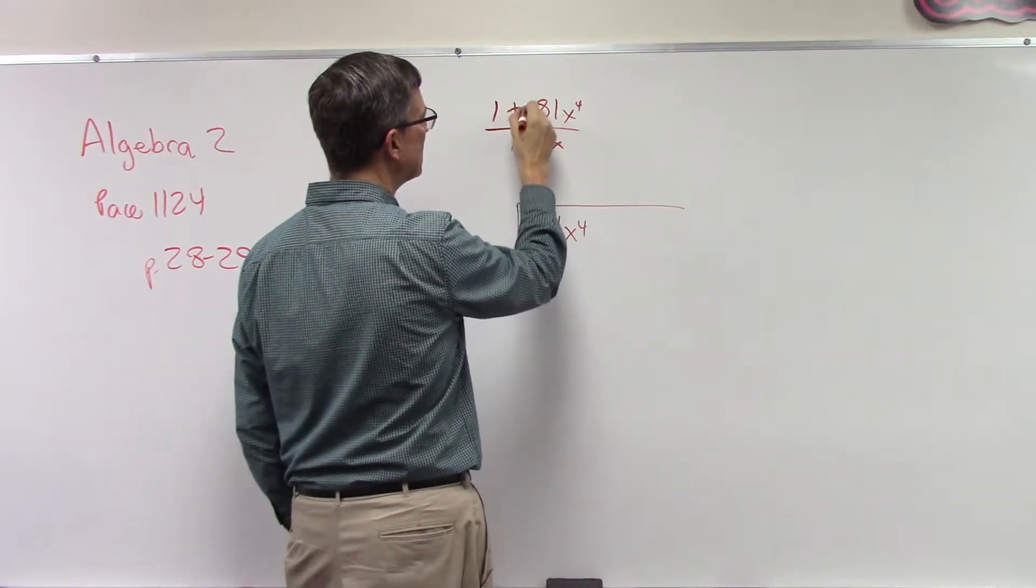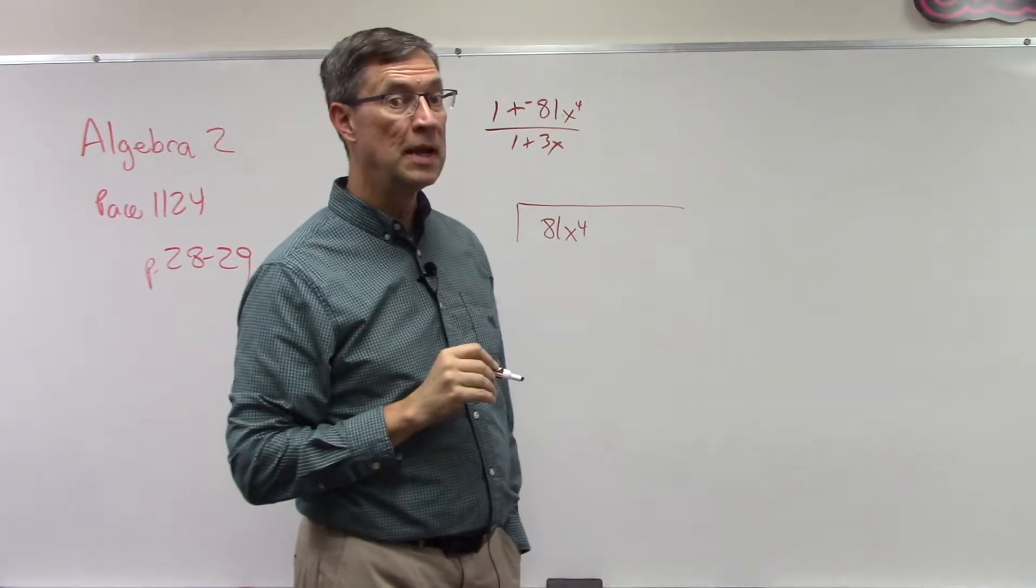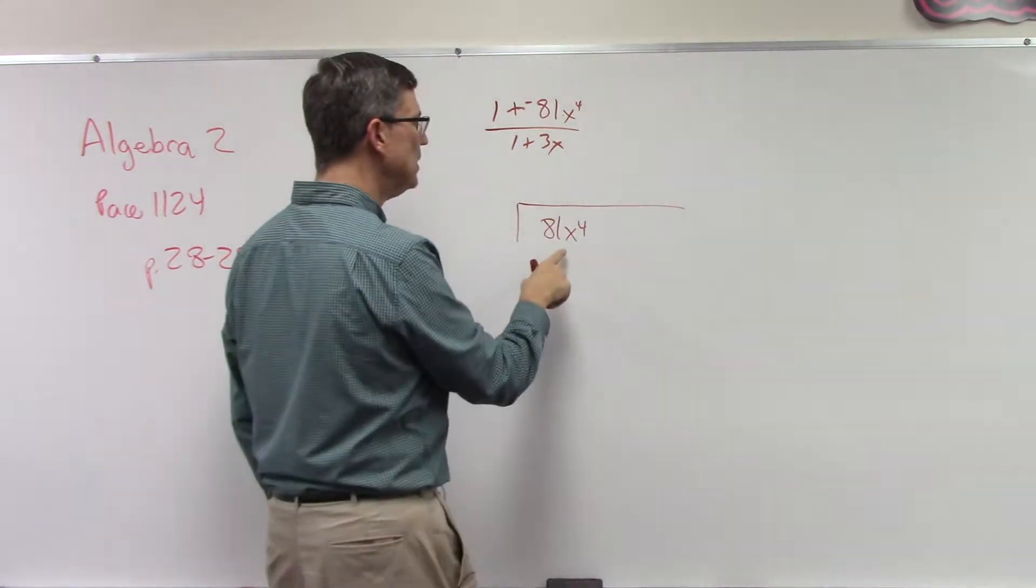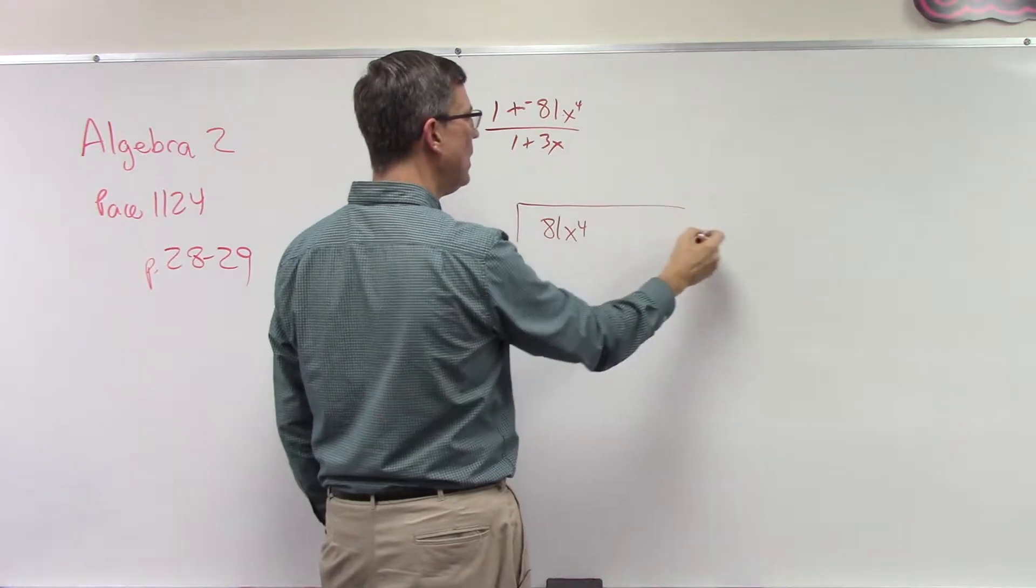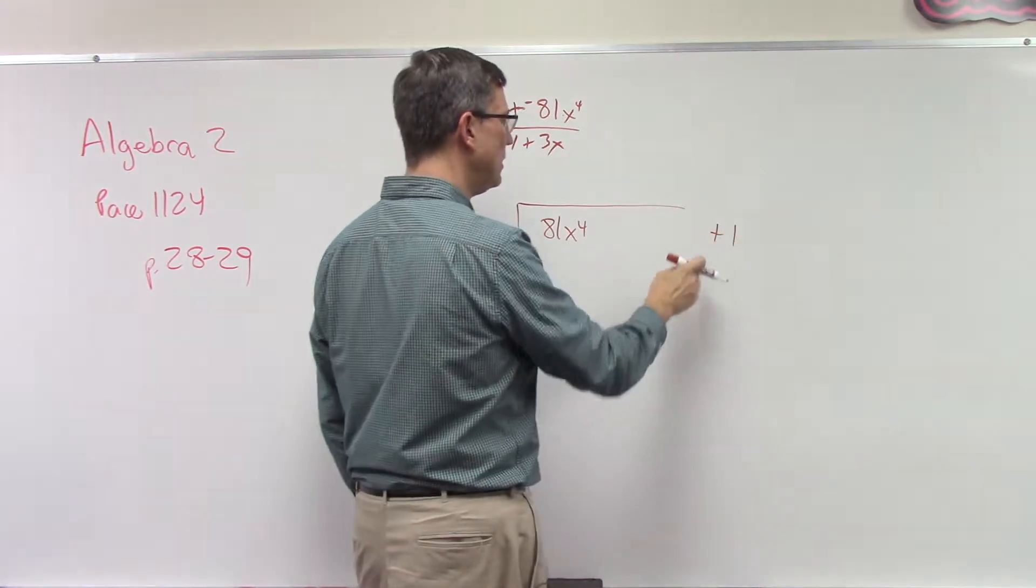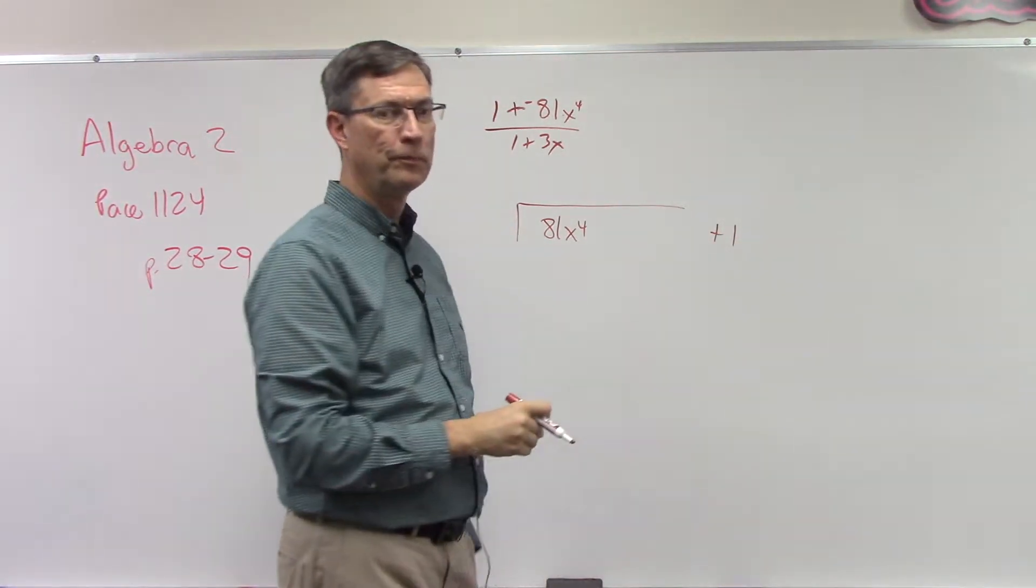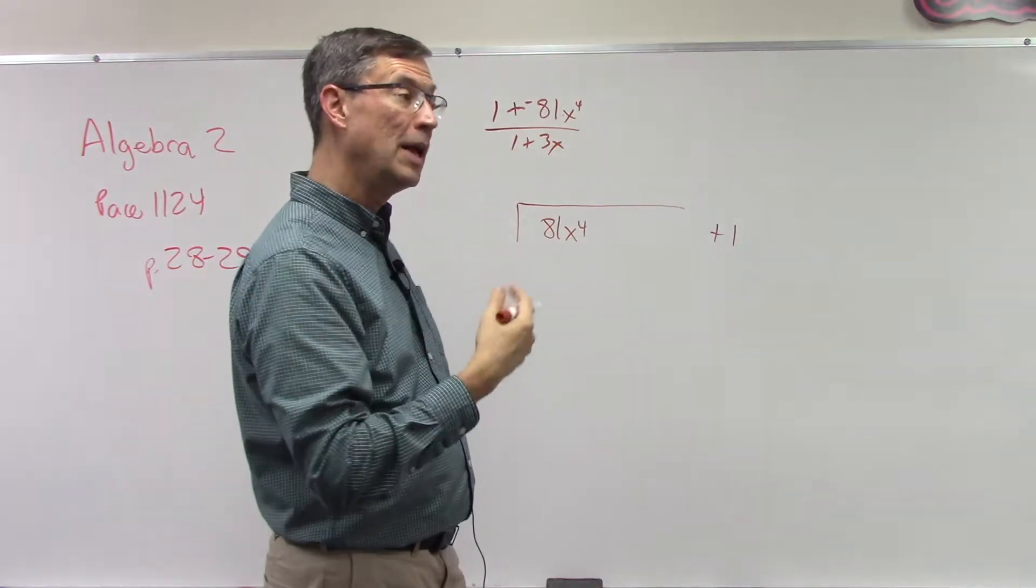So this one, the variable is x, so I need to put the 81x to the fourth first. And I notice that this negative is with this, I could say this is like 1 plus negative 81x to the fourth. So this needs to be the first one and then way out here I'm going to say plus 1.